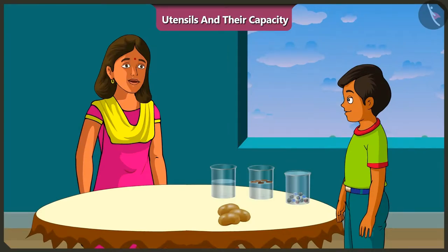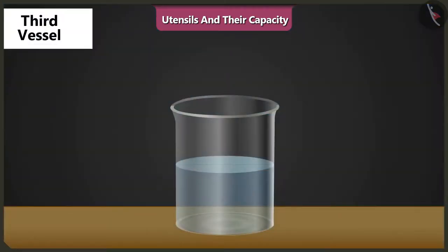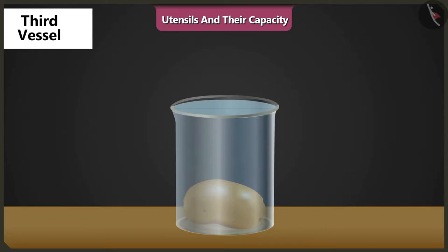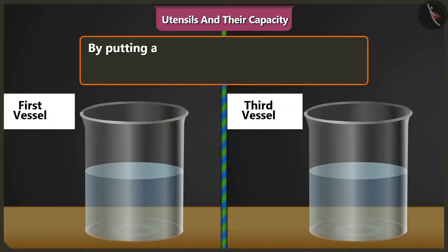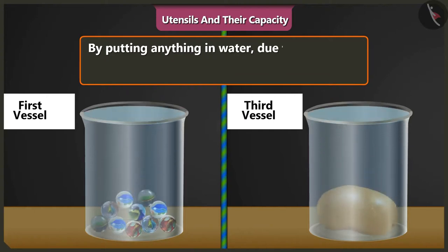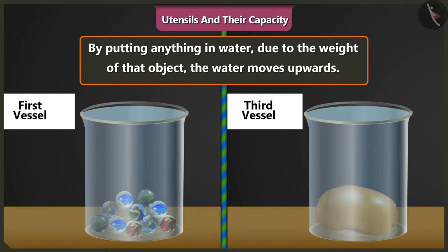Now let's drop these potatoes in the third vessel. Wow! The water level in the vessel raised as soon as we dropped potatoes in it. So we saw that when we drop any object in water, due to the weight of that object, the water moves upwards.